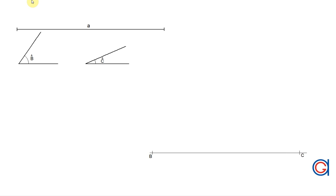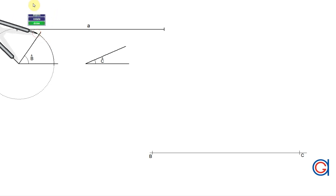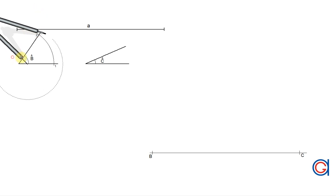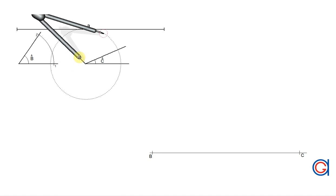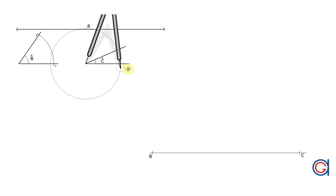Now we are going to transport the angles B and C onto the horizontal line from vertices B and C. To do this, setting our compass to a certain radius, we are going to scribe four arcs. Firstly, setting the compass on angle B, we scribe an arc until it cuts the adjacent lines at points one and two. Now we repeat the process with angle C, obtaining points three and four as shown here.